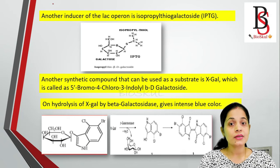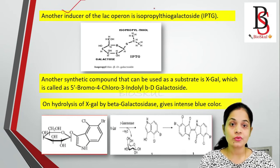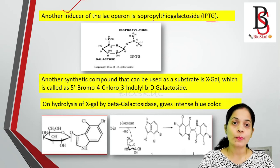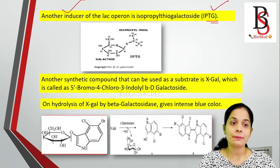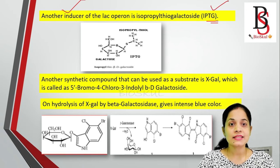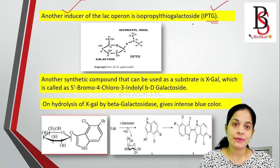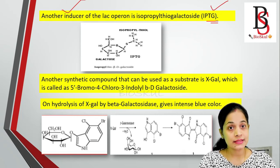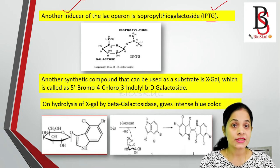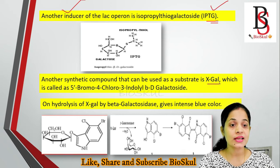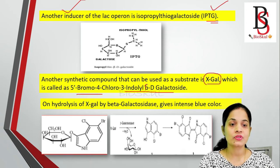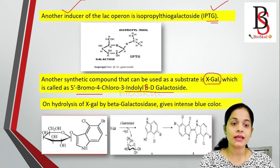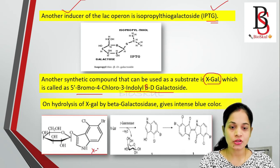There is another inducer called IPTG — isopropyl thiogalactoside. IPTG also acts as an inducer molecule for the lac operon. When IPTG enters the cell, transacetylase acetylates it. There is also another synthetic compound used as a substrate — not as an inducer — called X-gal, which is 5-bromo-4-chloro-3-indolyl-beta-D-galactoside.